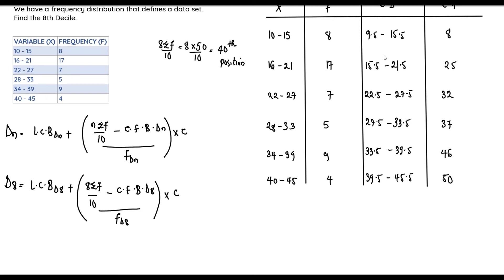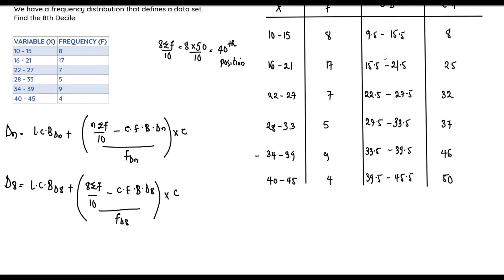To find which class contains the 40th position, we check the cumulative frequencies: 8 + 17 = 25, 25 + 7 = 32, 32 + 5 = 37, 37 + 9 = 46. Since 46 is the first cumulative frequency to exceed 40, the 40th position data falls in that class.